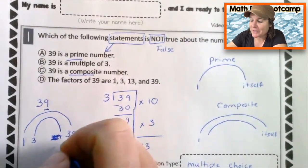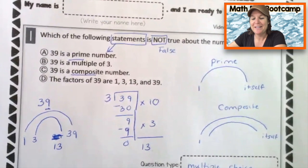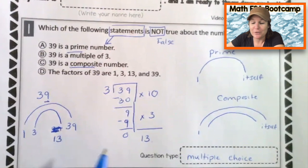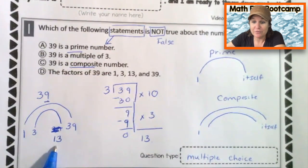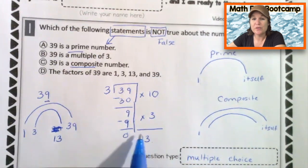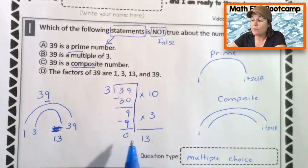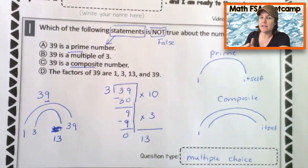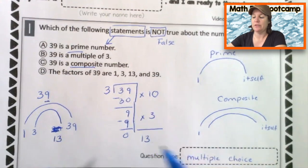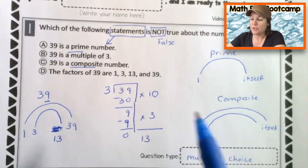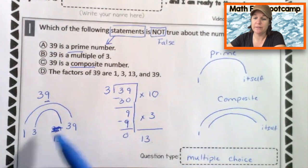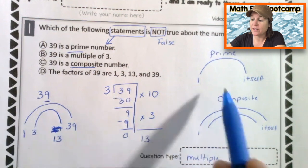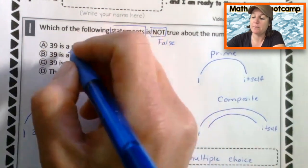Here I chose to use the partial quotients method for division, which I also show you in McCarthy math 155. I'm also a fan of the standard way, the long division way. Because of that, we can determine that 39 is not a prime number because it has more than just one and itself. Therefore it is composite.